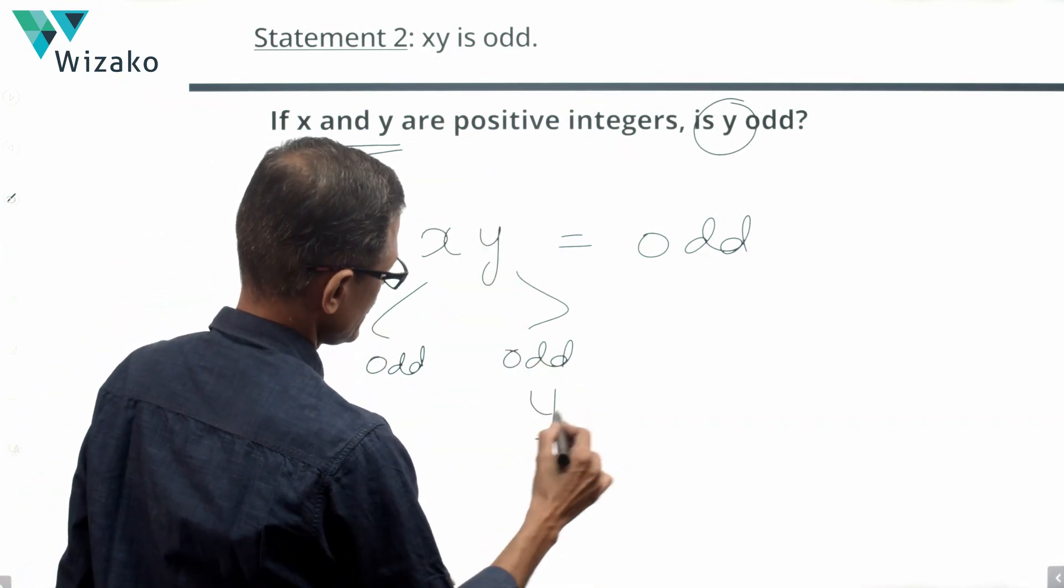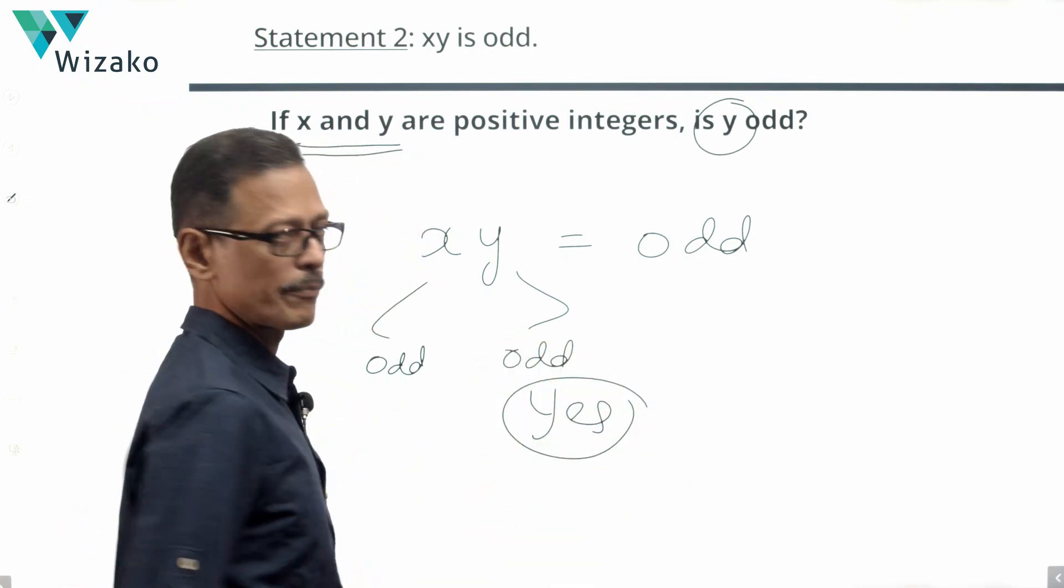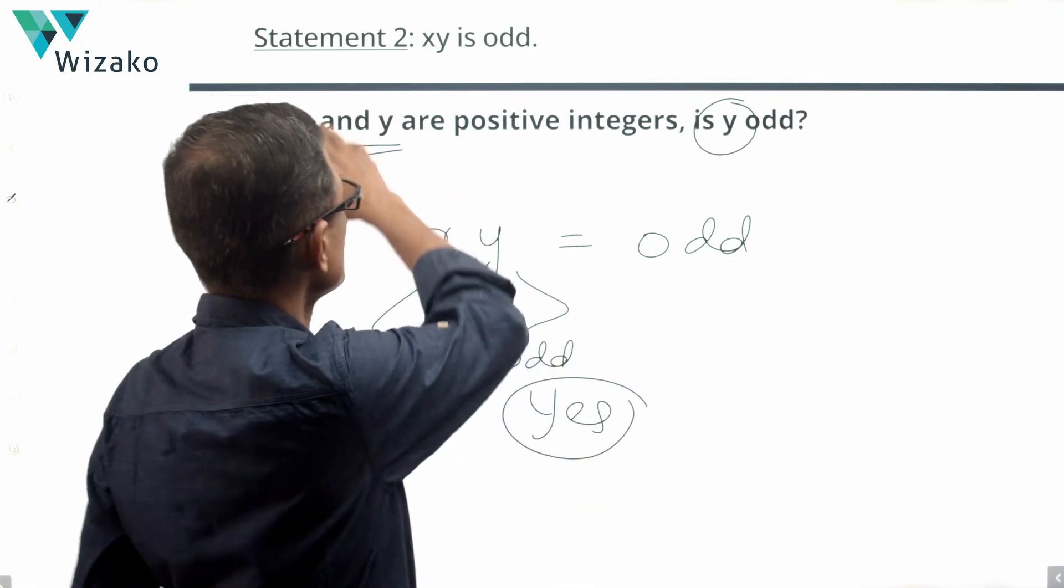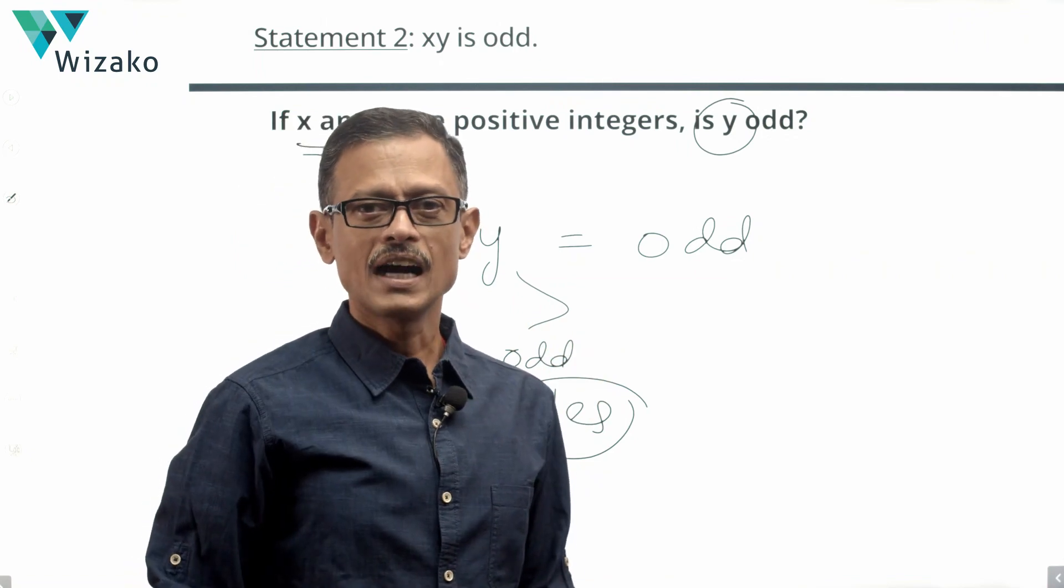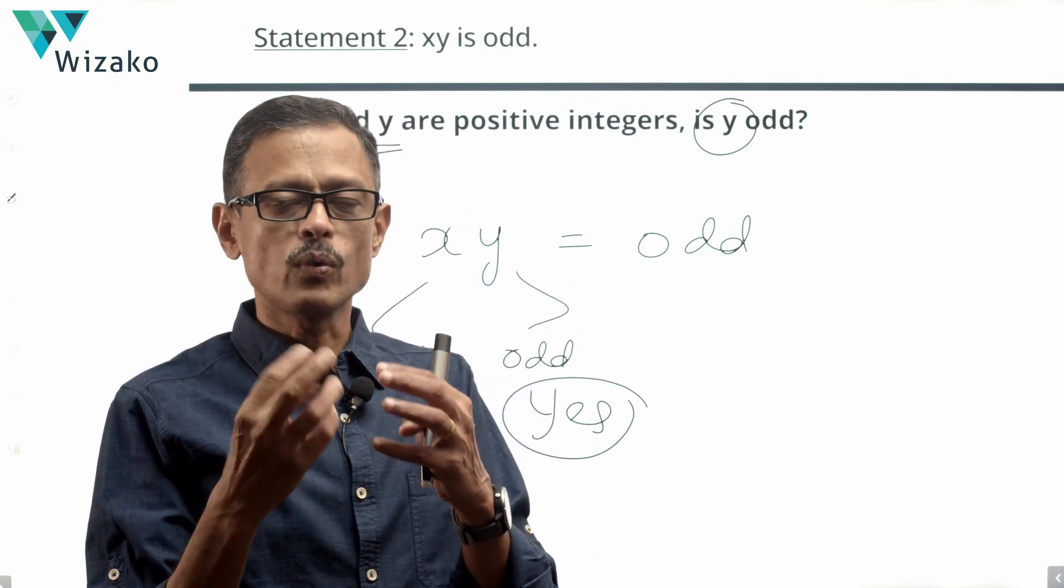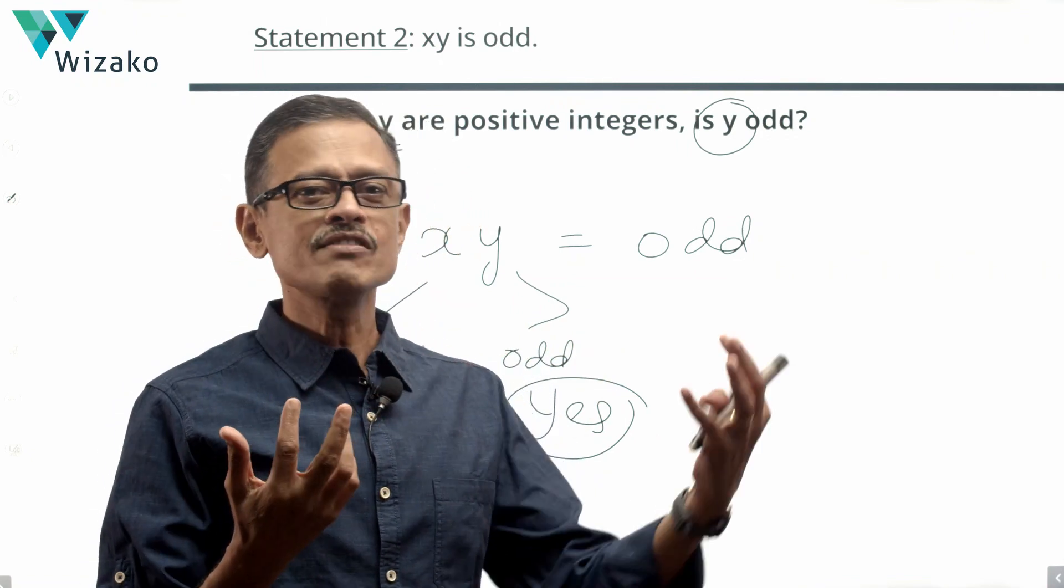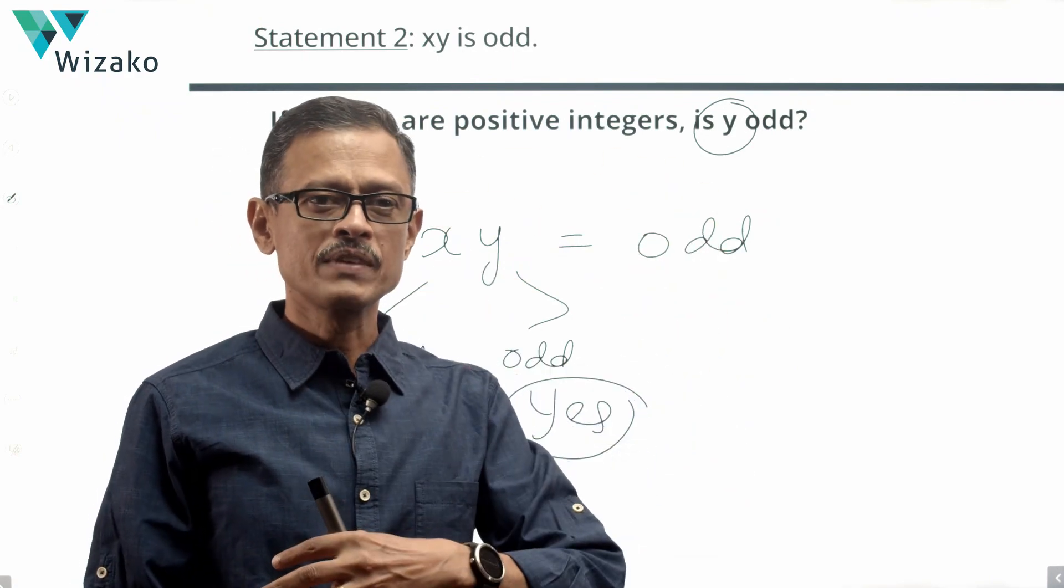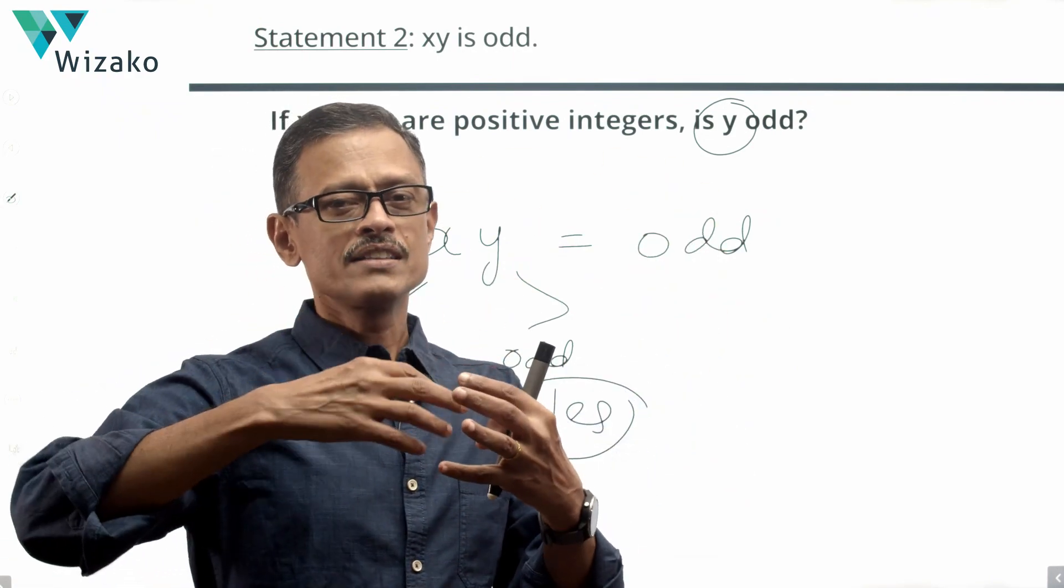The trap in this question is: we'll say, 'Hey, I know something about xy here. I do not know anything to determine why uniquely,' is what we'll think. And then we'll plug in information from statement one and say one says x is odd, two says x into y is odd, therefore y is odd is how we will determine and mark C as the answer.